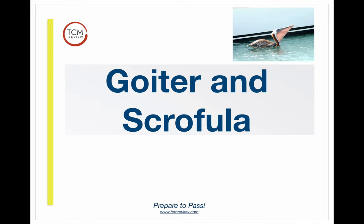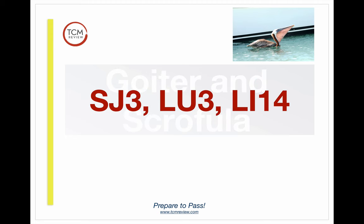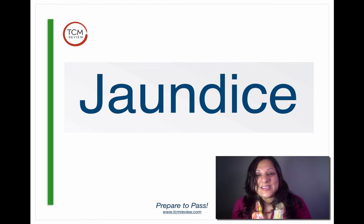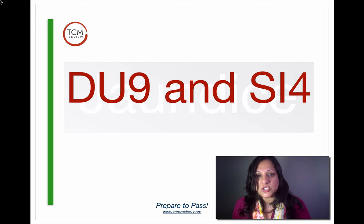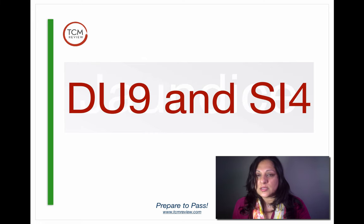Our next two syndromes are goiter and scrofula. Scrofula is a disease with glandular swelling — and in that way it's the same where goiter is thyroid swelling. Both can be treated with Sanjiao 3, Lung 3, and LI14. Then we have jaundice, which is treated with DU9 and also SI4.